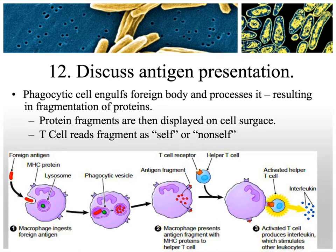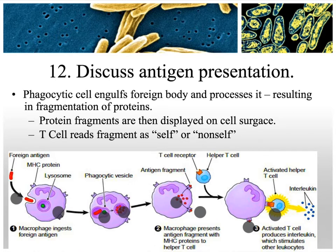Antigen presentation is simply a phagocyte eating a foreign substance and then displaying portions of that substance on its surface. The phagocyte digests the bacteria and small pieces appear on the cell surface. A helper T-cell binds to that antigen and identifies whether it is self or non-self. If it doesn't belong, the helper T-cell releases interleukin, which causes proliferation of B cells or killer T cells as needed.